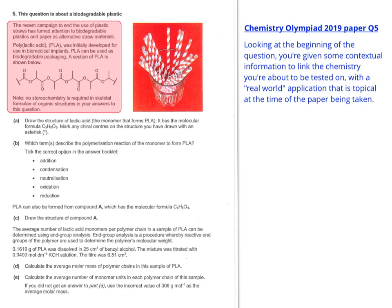So it's also important to notice that they've told you that no stereochemistry is required in the skeletal formulae. So that means you don't have to do two optical isomers, for example, or an E or Z isomer. They're not interested in that. They're testing out your ability to process things like the repeating unit and maybe some of the reactions of the substance.